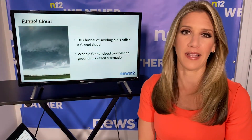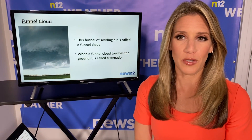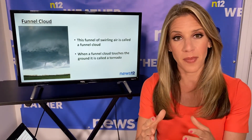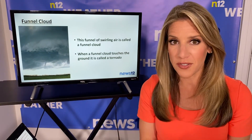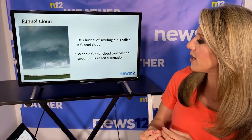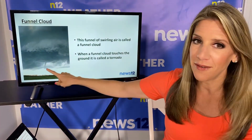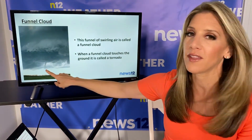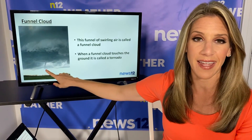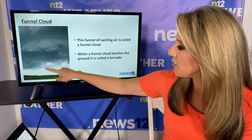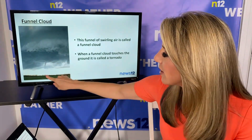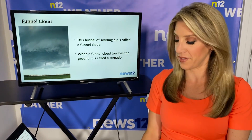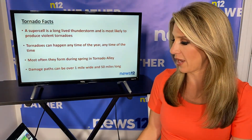Alright — a funnel cloud. Once we get a strong thunderstorm to develop and once we start to see that rotation, you'll notice a funnel cloud, but it's not reaching the ground just yet. Once that funnel cloud continues to develop and touches the ground — bam — that's when it becomes a tornado.